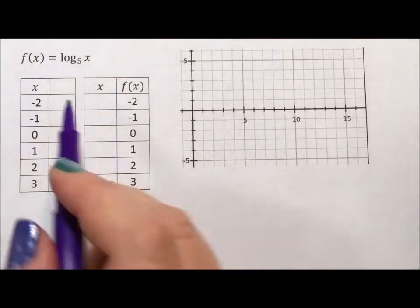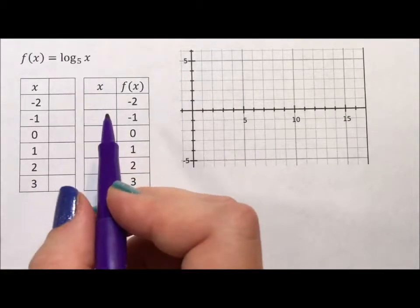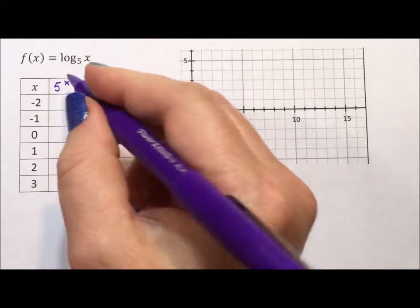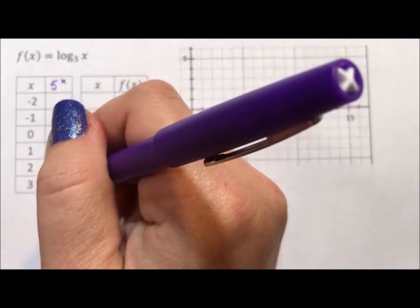So when I'm graphing a logarithmic function, I like to use its inverse. In this case, the inverse of log base 5 is 5 to the x. Inverses are really simple to generate a table of values for.